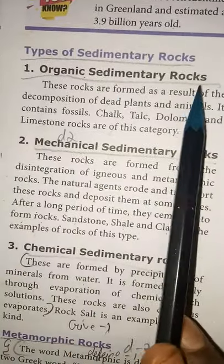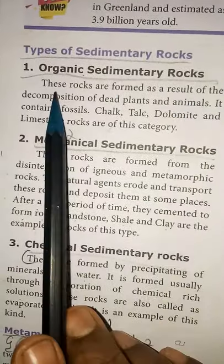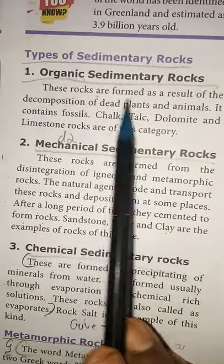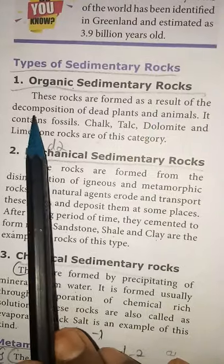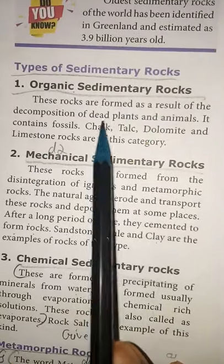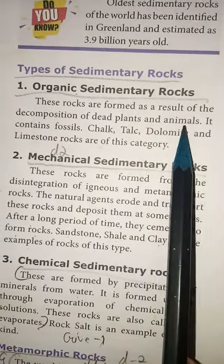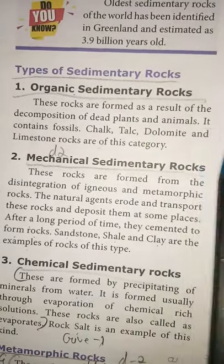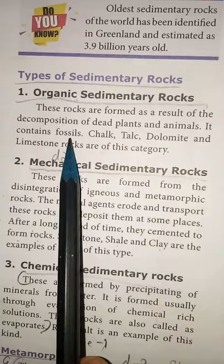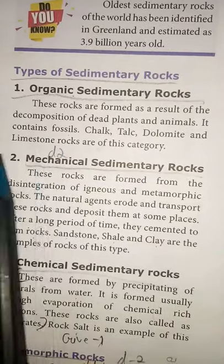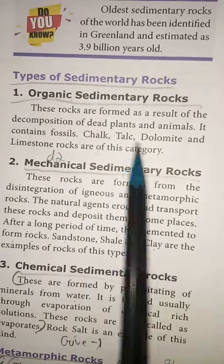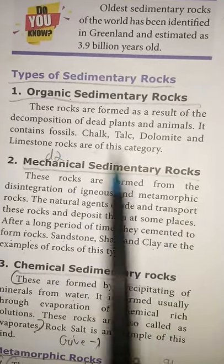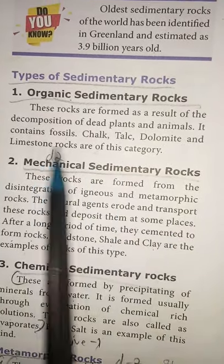First, organic sedimentary rocks. These rocks are formed as a result of the decomposition of dead plants and animals. They contain fossils. Examples are chalk, talc, dolomite, and limestone.